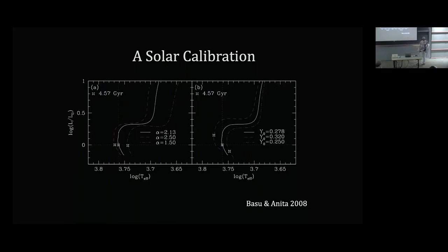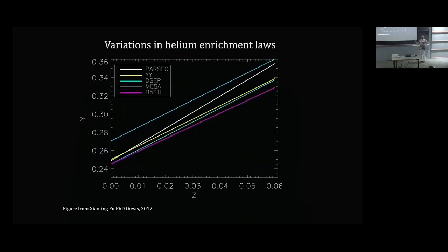Regarding helium: if you're running a grid of models, you calibrate to get the solar helium, but then for a star that's +0.5 dex in metallicity, helium is really hard to measure in low-mass stars. So we generally set a helium enrichment law where dY/dZ is some number — close to 1 or 1.5 — reflecting that metals and helium are produced together through stellar evolution and should increase in lockstep. Some people draw a line between the calibrated solar value and primordial helium to set the slope. Helium matters, it shifts your models around, and it's something that's hard to measure directly.